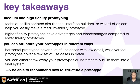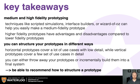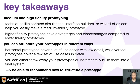The key takeaways from this lesson are: medium and high-fidelity prototyping techniques like scripted simulations, interface builders, or Wizard of Oz can help you easily make a medium-fidelity prototype. As you move into higher-fidelity prototypes, there are advantages and disadvantages compared to lower-fidelity ones. You can structure prototypes as horizontal — covering many use cases with low detail — or vertical — covering fewer use cases with lots of completeness. You can throw away your prototypes, incrementally build them, or evolve them into a final system. Ultimately, you should be able to decide what scope your prototype has and whether to incorporate it into the final system, and recommend how to structure it along fidelity, horizontal or vertical scope, or how it fits into your final design.